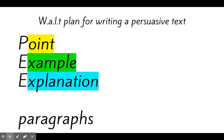So P is for point, E is for example, E is for explanation. If you've got these things in this order in your paragraphs, then you are writing a really strong persuasive text and you're backing up all the points that you are making.